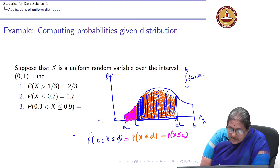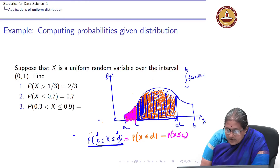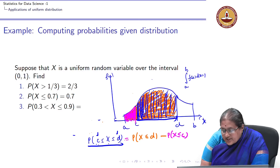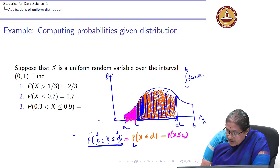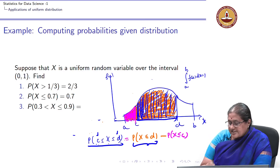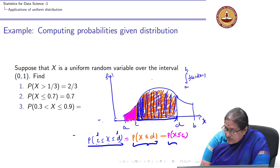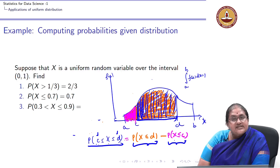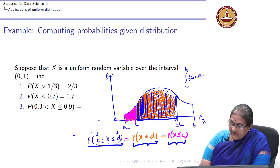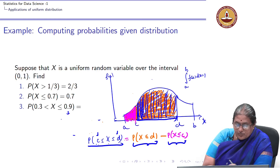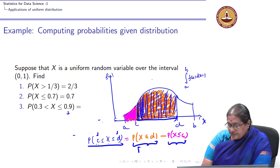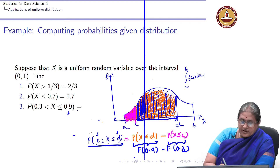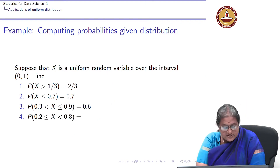So for any two constants C and D, probability C ≤ X ≤ D equals probability X ≤ D minus probability X ≤ C. Here D is 0.9 and C is 0.3, so this is F(0.9) minus F(0.3), which gives 0.6.